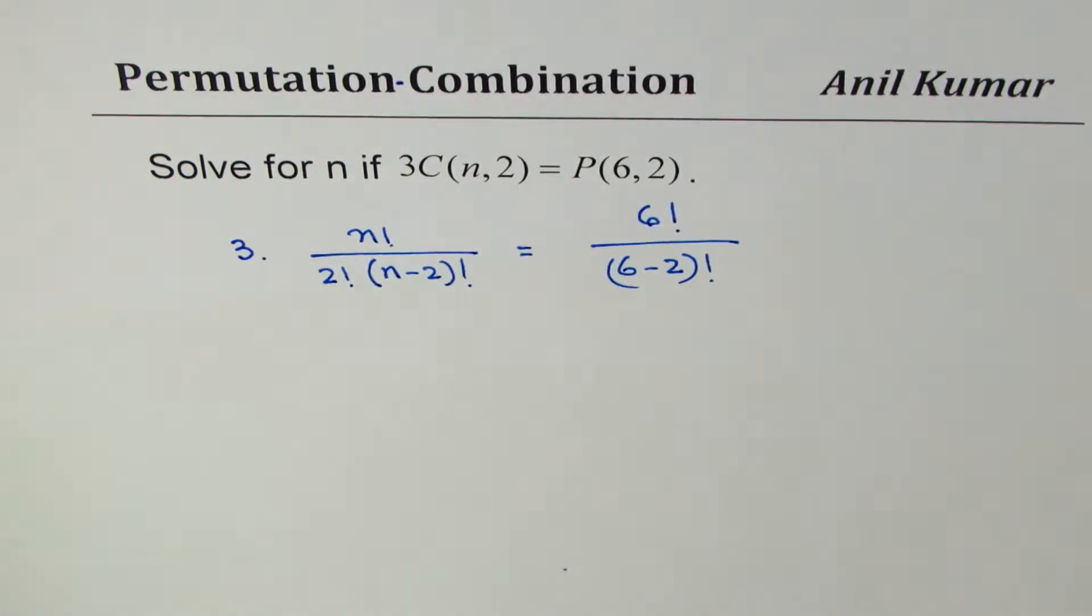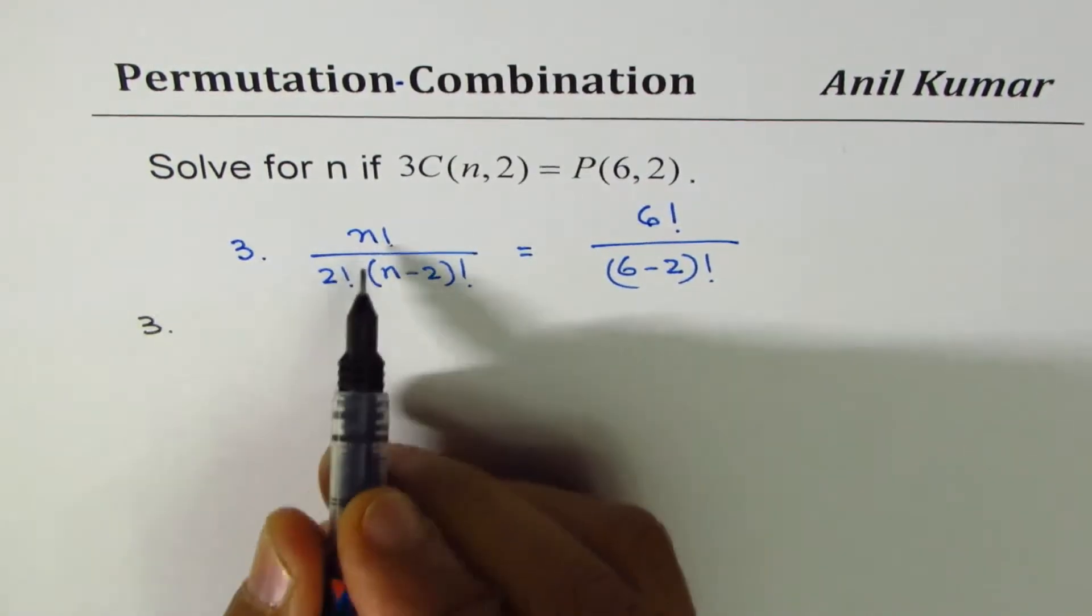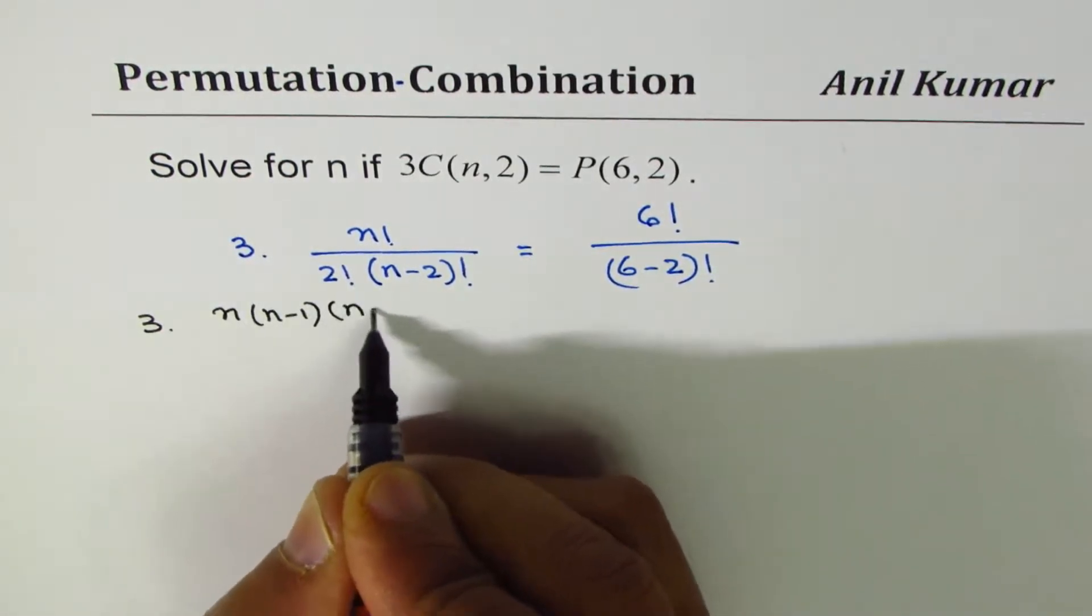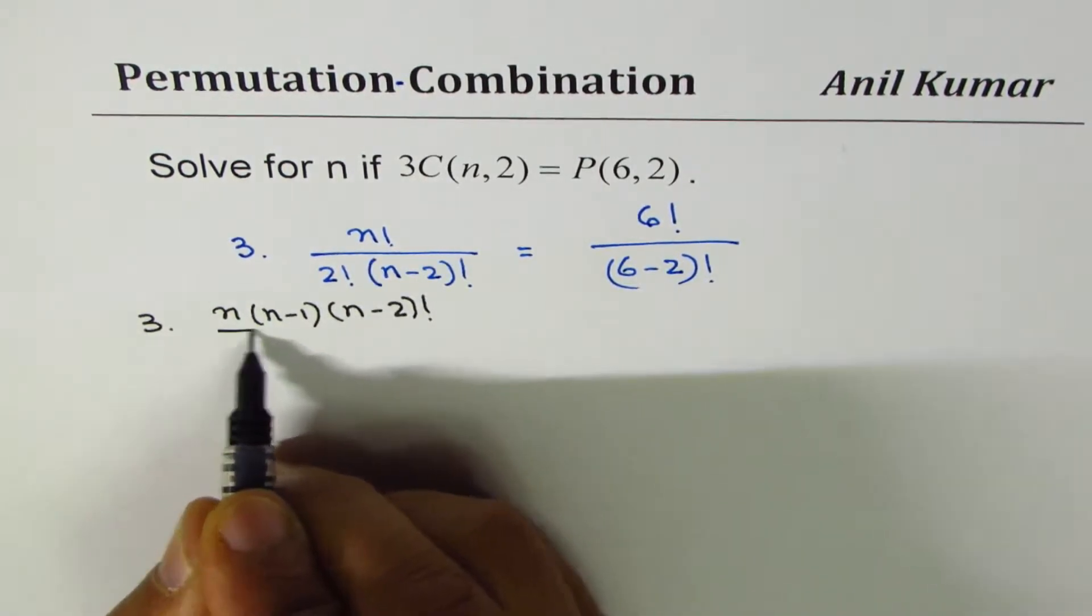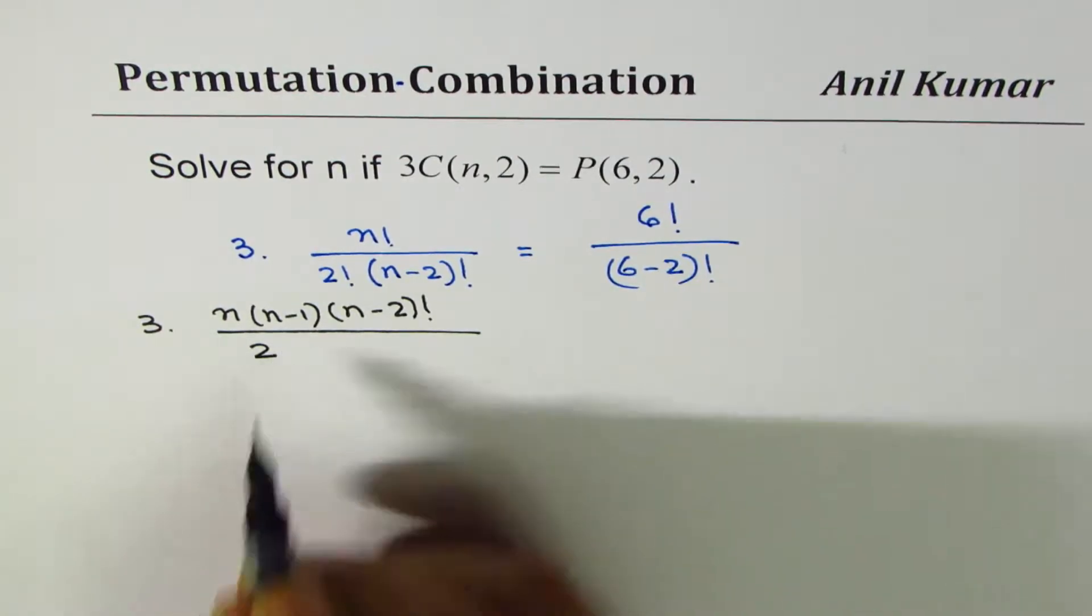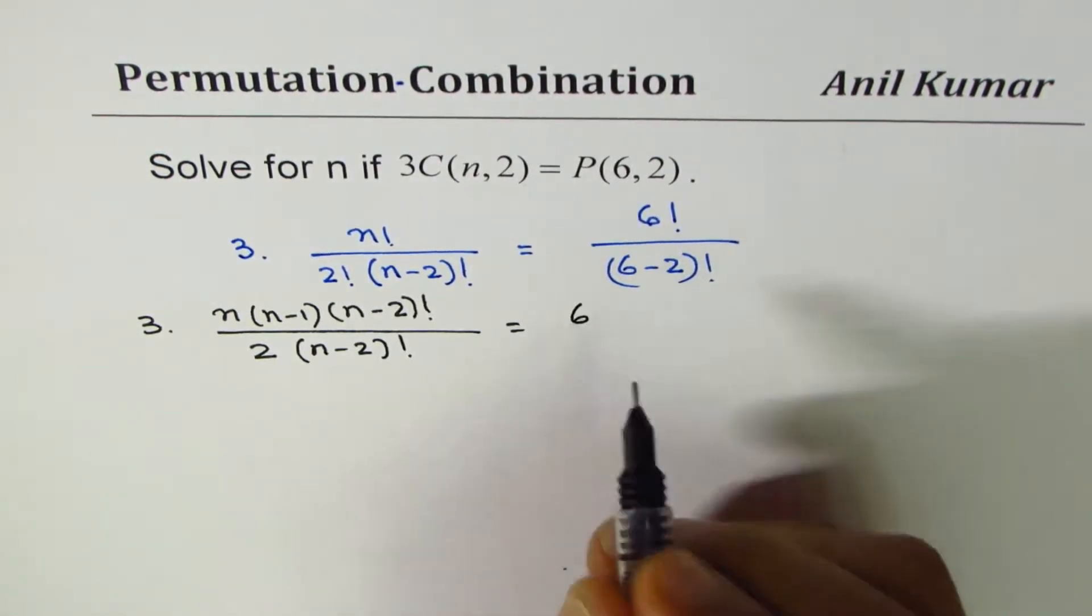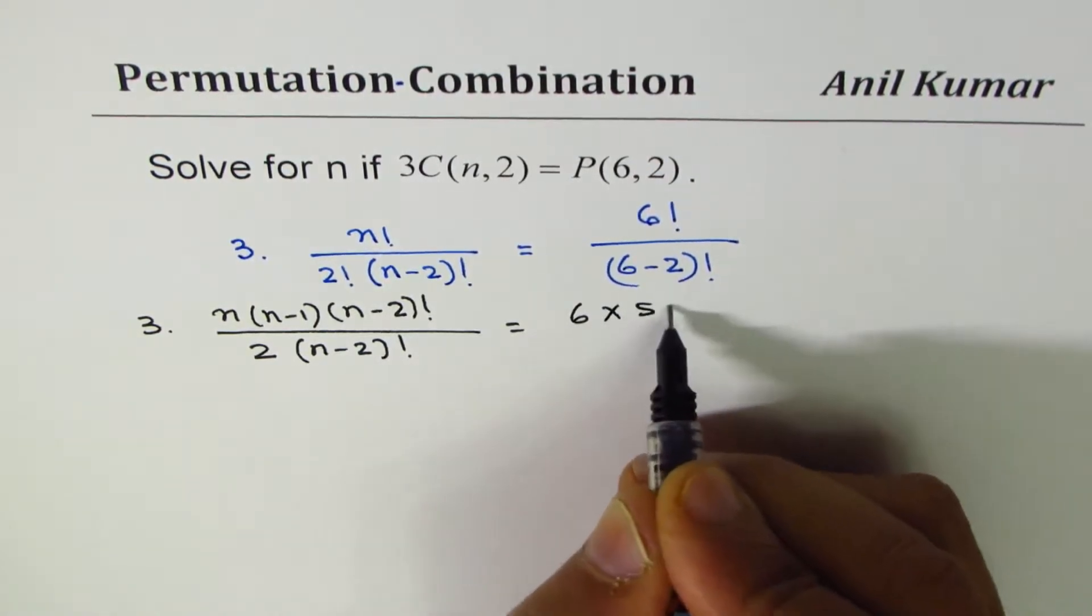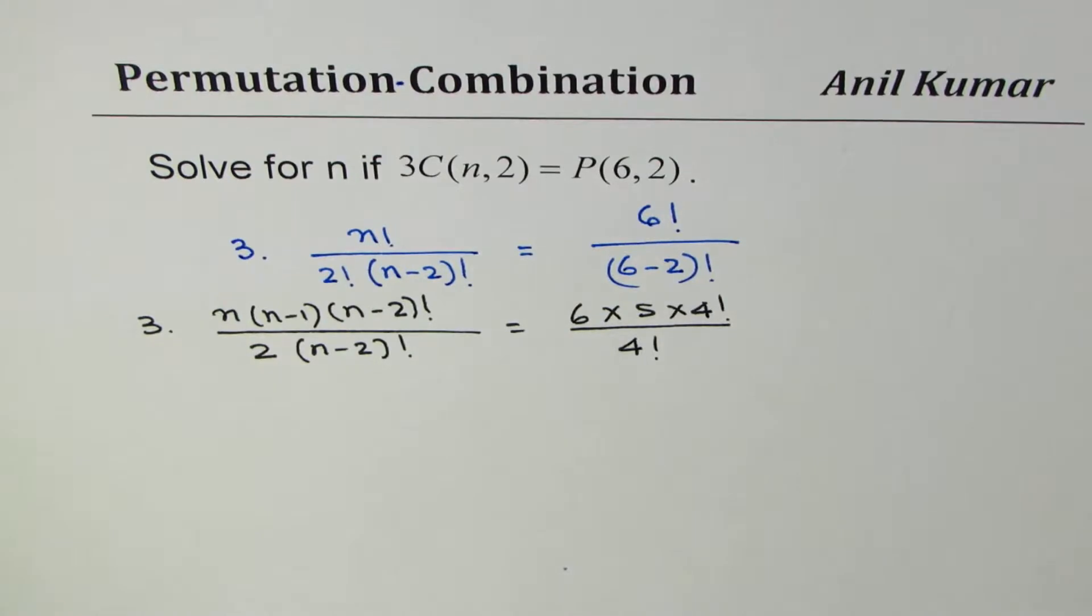Now let's expand. n factorial over (n-2) factorial I can write as n times (n-1) times (n-2) factorial, and we can cancel that. Divide by 2 factorial which is 2 times 1, so I write 2(n-2) factorial. On this side we get 6 factorial, which is 6 times 5 times 4 factorial divided by (6-2) which is 4 factorial.